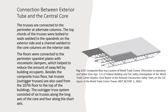The trusses were connected to the perimeter at alternate columns. The top chords of the trusses were bolted to seats welded to the spandrel on the exterior side and a channel welded to the core columns on the interior side. The floors were connected to the perimeter spandrel plates with viscoelastic dampers, which helped reduce the amount of sway experienced by building occupants.